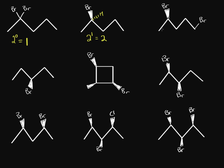What about this one? We have these carbons with multiple hydrogens — they can't be chiral carbons. This one has a hydrogen, a bromine, and the rest of the chain, so this is a chiral carbon. What about this one? Well, it has a bromine and the rest of the chain, but then two hydrogens, so that's an issue. Just because you see a bromine does not make it a chiral carbon. So we only have one chiral carbon, which means we have two stereoisomers.